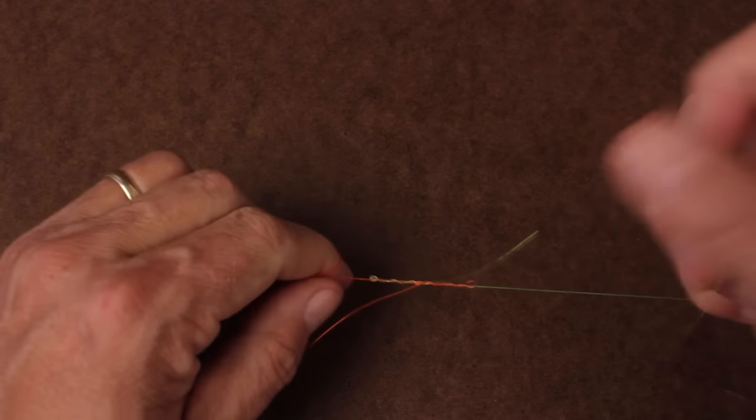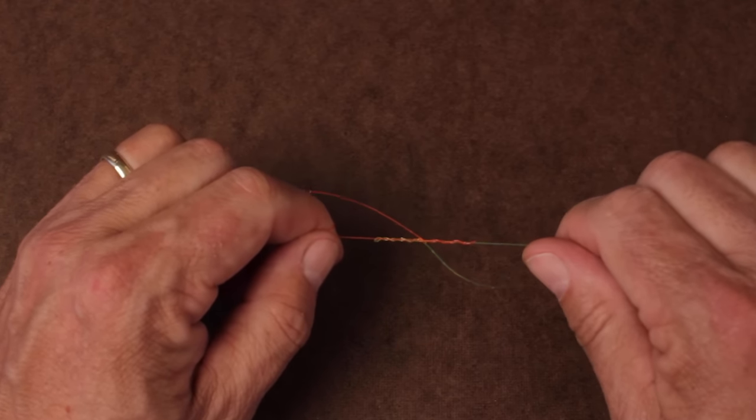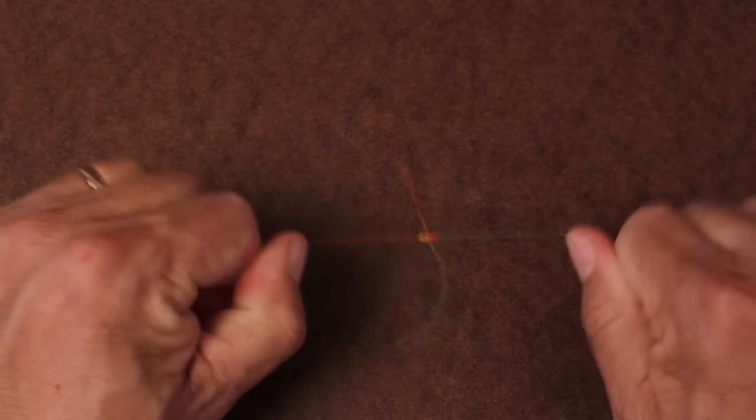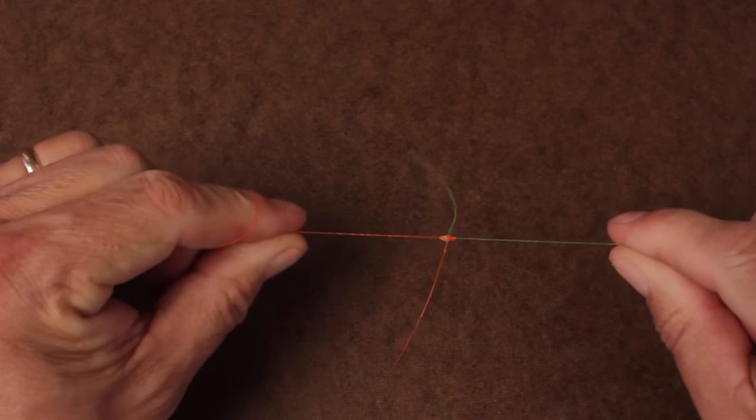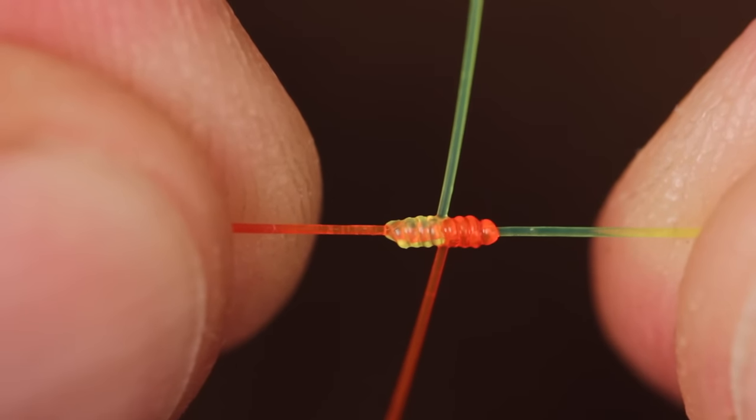Lubricate the knot with saliva. Lip balm also works well. Then rapidly pull in opposite directions on the standing line to firmly close and seat the knot. If done correctly, it should look something like this.